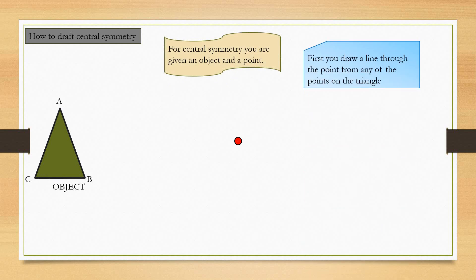First, you draw a line through the point from any of the points in the triangle. I use point A.